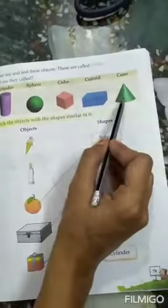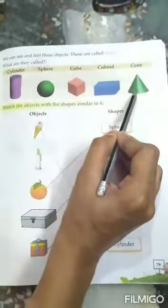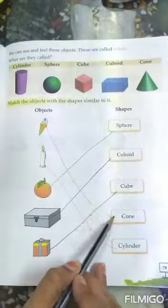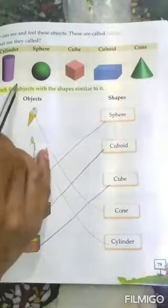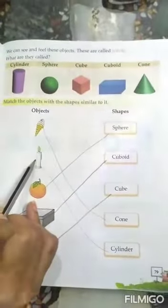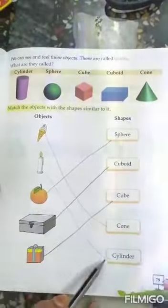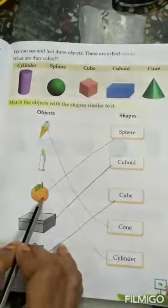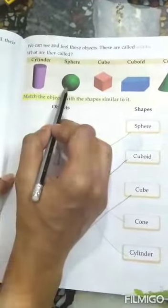cream cone. I explained you before, what is the shape of the ice cream cone? Cone. So you will match with the cone. Candle. What is the shape of that? Cylinder. So candle, cylinder. Orange, sphere. What is the shape